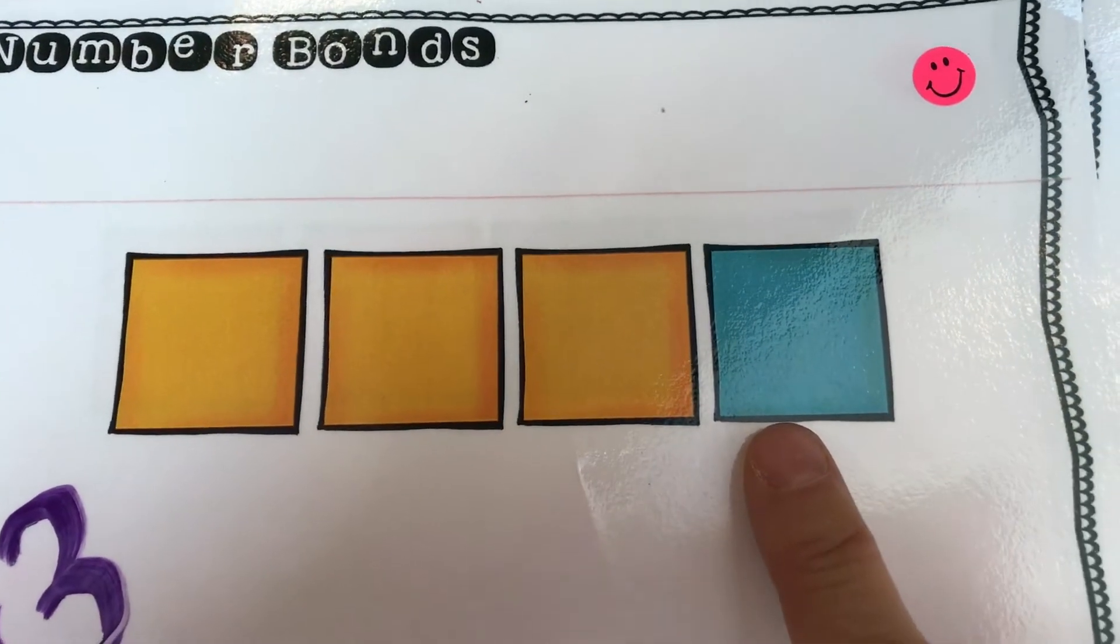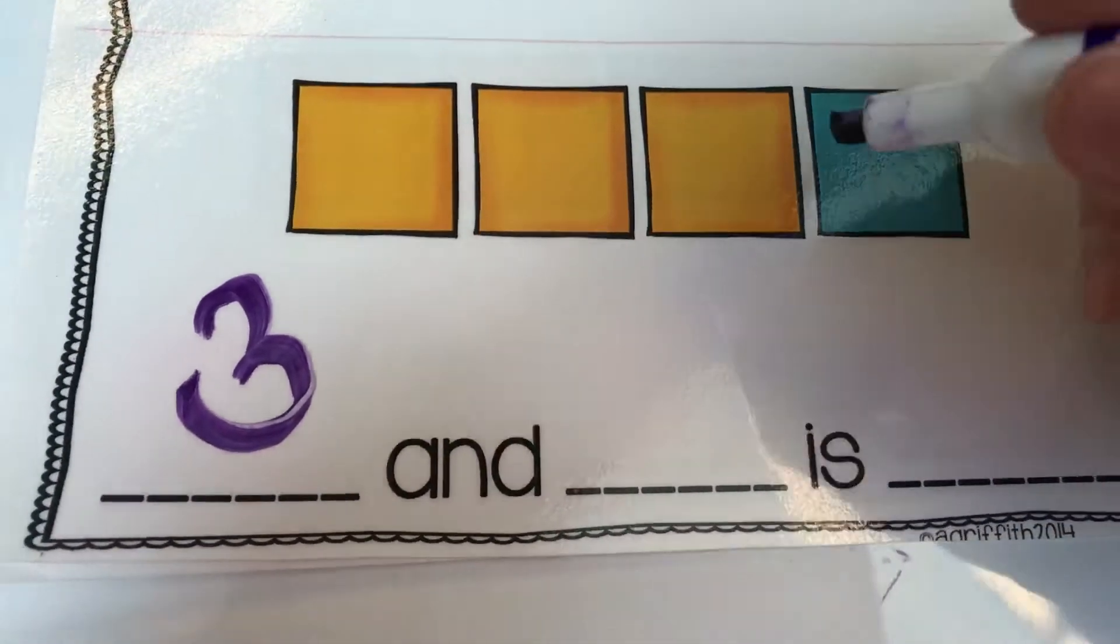How many blue squares are there? That's right. One. So you're going to write the number one.